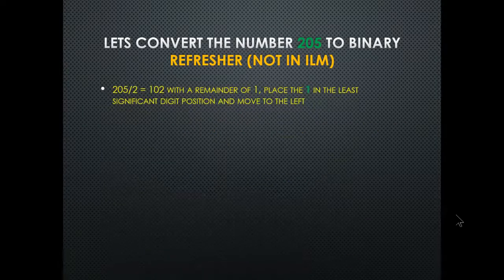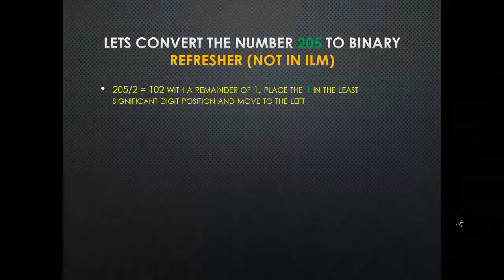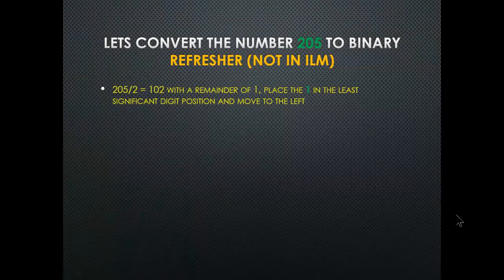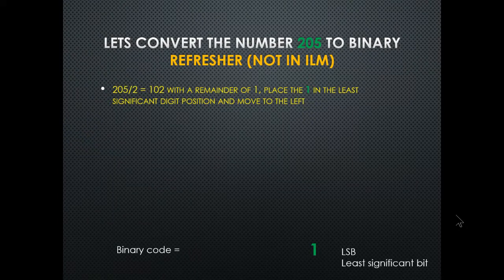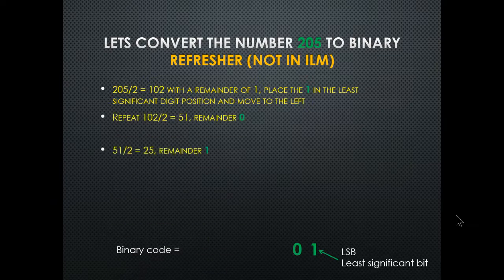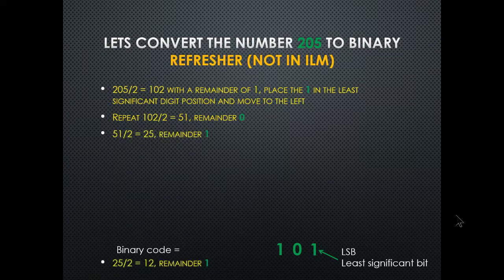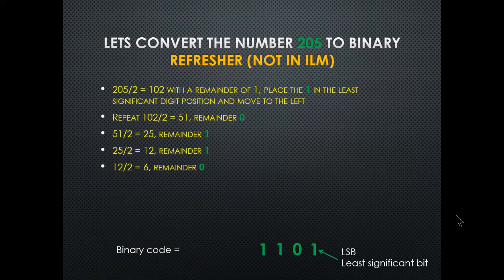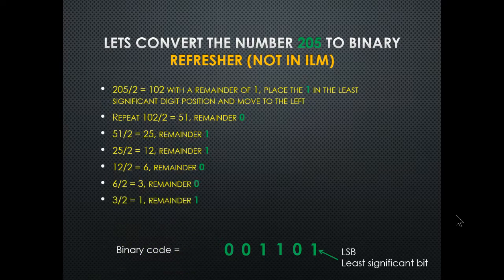Converting decimal to binary: 205 ÷ 2 = 102 remainder 1. You keep repeating that division process — the remainder to the right is the least significant bit, and you keep going. The most significant bit is furthest left. The full conversion is stepped out in the PowerPoint presentation.